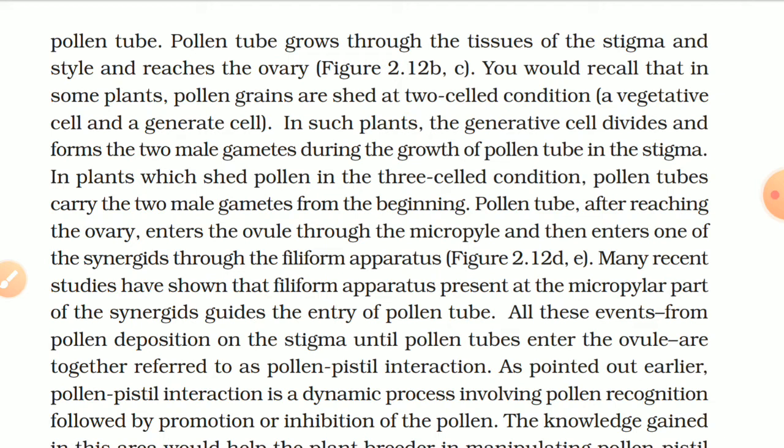In some plants, pollen grains are shed at the two-cell condition — a vegetative cell and a generative cell. In such plants, the generative cell divides and forms the two male gametes during the growth of the pollen tube in the stigma. In plants which shed pollen in the three-cell condition, the pollen tube carries the two male gametes from the beginning. The pollen tube, after reaching the ovary, enters the ovule through the micropyle and then enters one of the synergids through the filiform apparatus. Recent studies have shown that the filiform apparatus present at the micropylar part of the synergid guides the entry of the pollen tube.